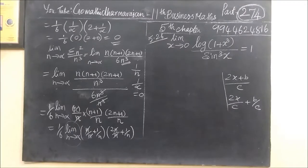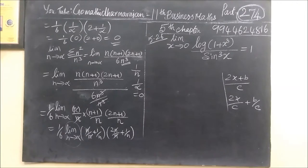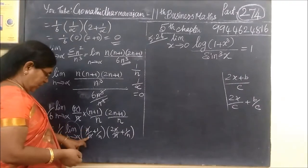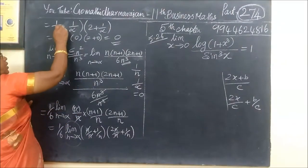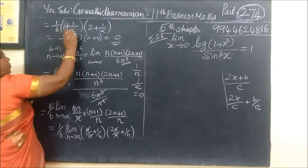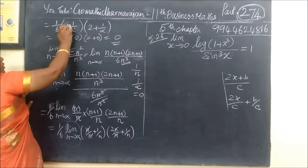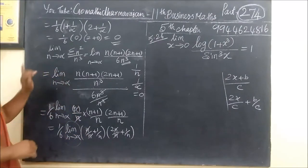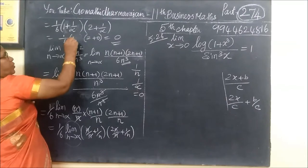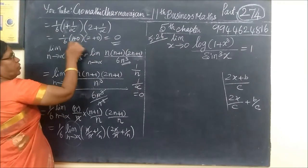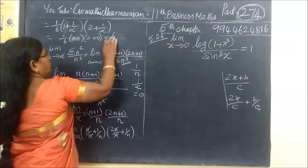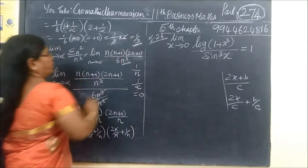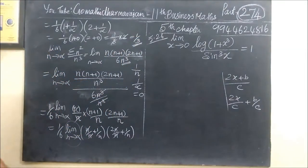That was one mistake — 2 by infinity gives zero but 2 plus 0 equals 2. So we have 1 by 6 into 2, which gives 1 by 3. Therefore the answer is 1 by 3.